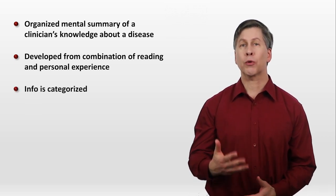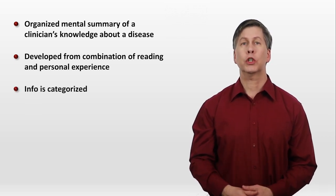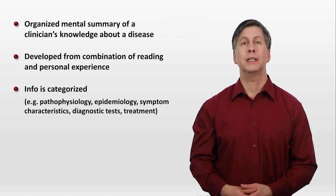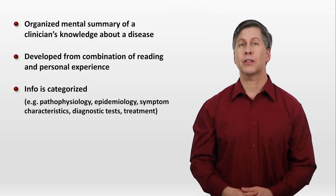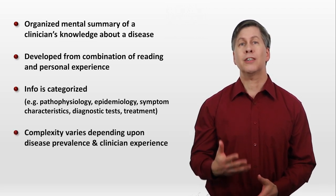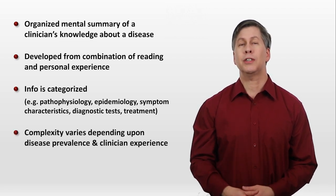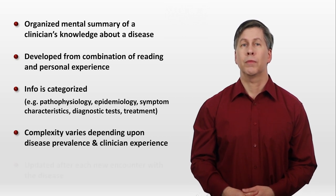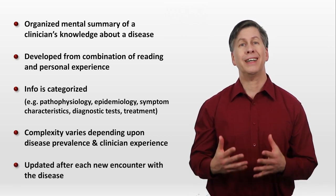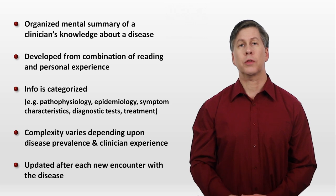Information is categorized, such as by pathophysiology, epidemiology, symptom characteristics, diagnostic tests, and treatment. The complexity of an illness script varies depending upon disease prevalence and clinician experience, and the script is updated after each new encounter with the disease.